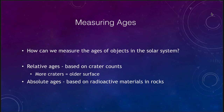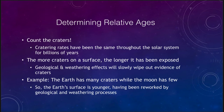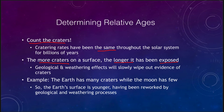Looking at determining relative ages — first of all, it's just counting the craters. Since cratering rates have been about the same for the last few billion years, that tells you how old an object's surface is. When we look at an object and see more craters on the surface, that means the longer that surface has been exposed to space and to impacts.